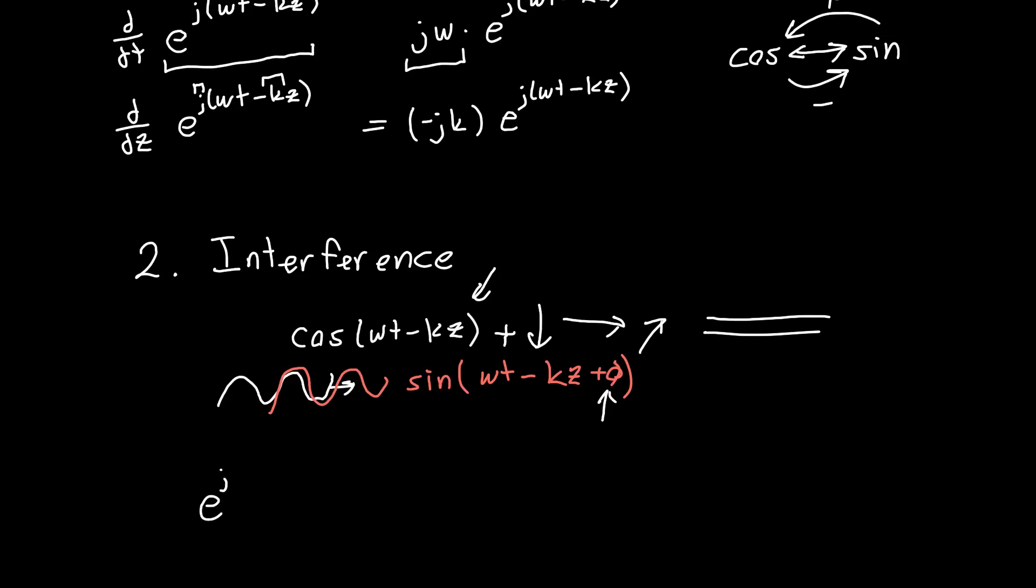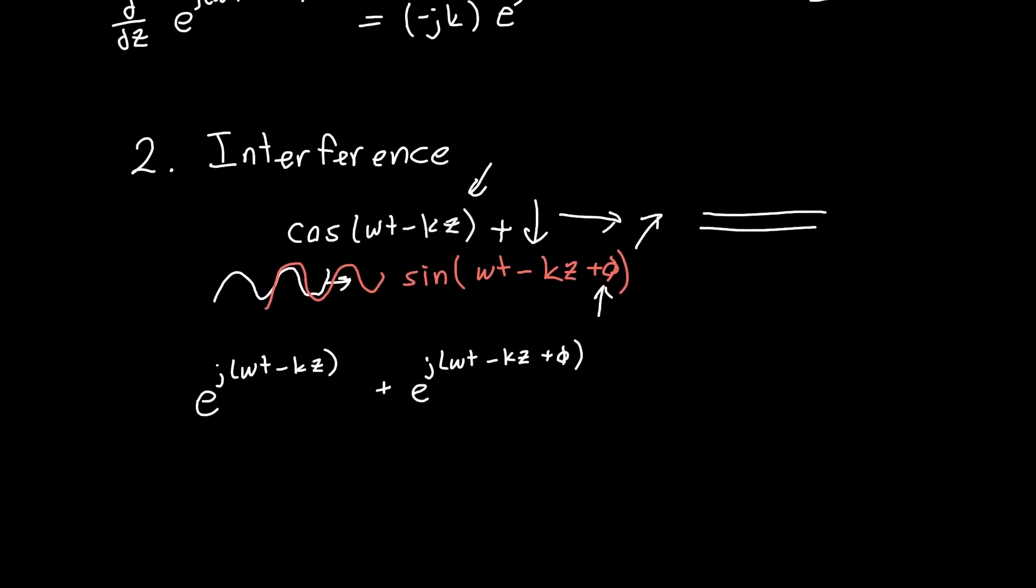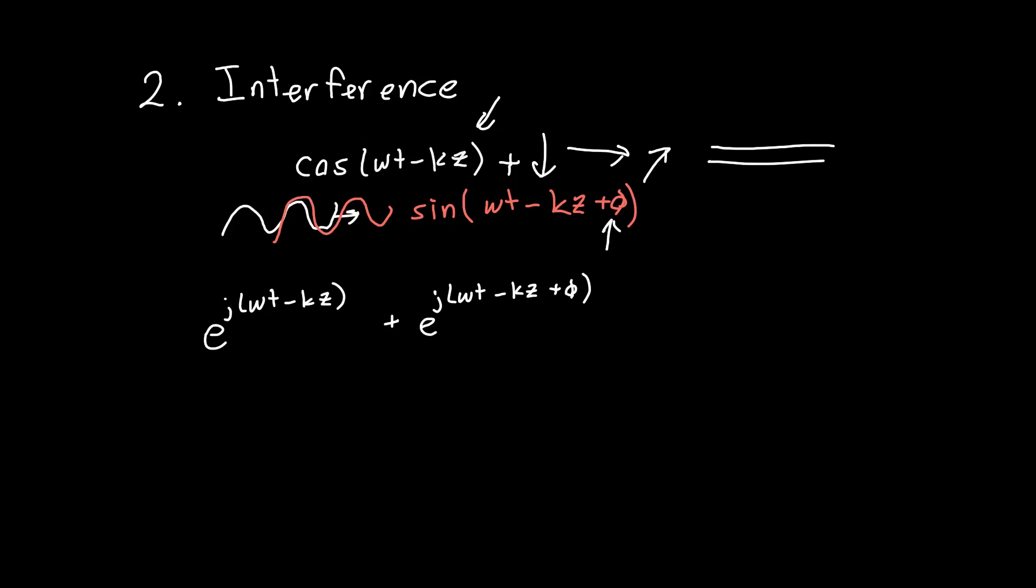But let's say we want to add two complex exponentials. So e to the j omega t minus kz. And maybe one with arbitrary phase. So omega t minus kz plus phi. Well, this, as with derivatives, it's just wonderfully simple. So we're just going to factor out the common factor between these two. So that's just e to the j omega t minus kz. And then this guy becomes one. This guy becomes e to the j phi.